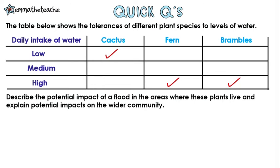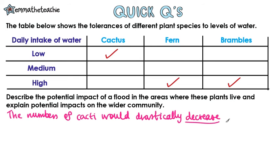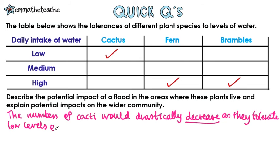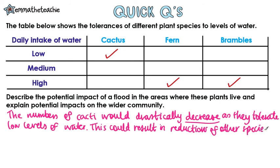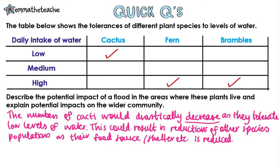It's important to discuss each plant, starting with the low daily intake of water plants, which is just the cactus. The numbers of cacti would drastically decrease as they tolerate low levels of water. This could result in a reduction of other species' population sizes as their food source or shelter is reduced.